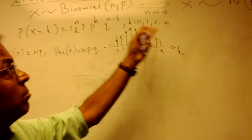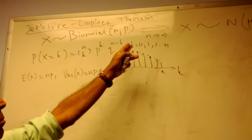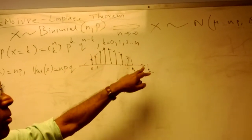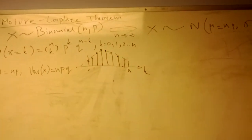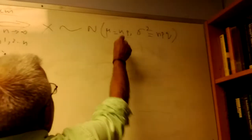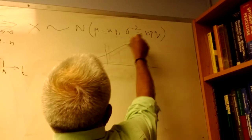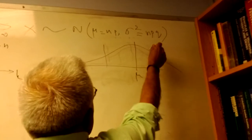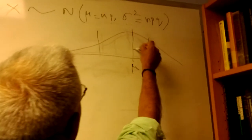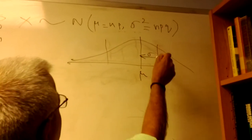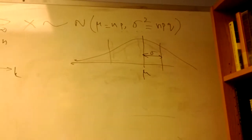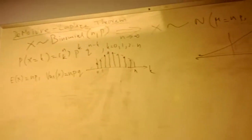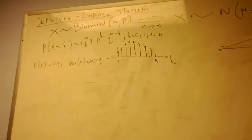So the theorem states that as n becomes larger and larger, this shape will begin to look like a Gaussian shape, with some mean mu and standard deviation sigma, where the mean is np and the variance is npq — which is what I'm going to show.